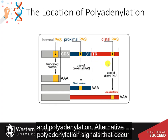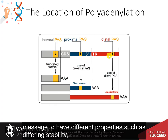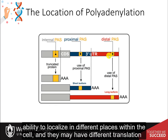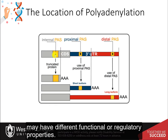Alternative polyadenylation signals that occur within the three prime untranslated region of the transcript can enable the resulting message to have different properties such as differing stability, ability to localize in different places within the cell, and different translation efficiencies. Internal polyadenylation signals, on the other hand, may have different functional or regulatory properties.